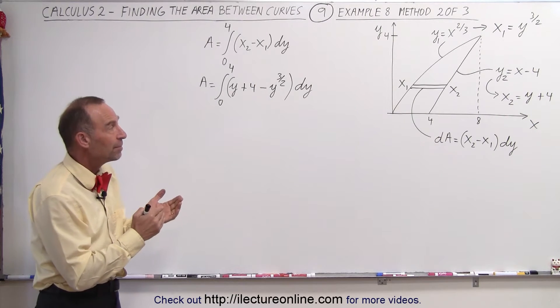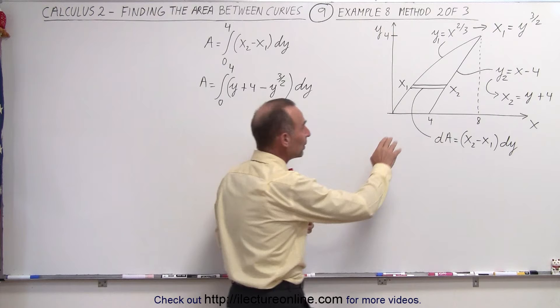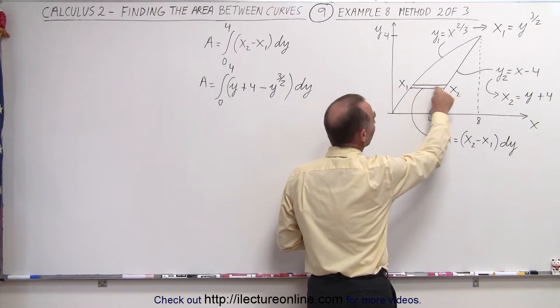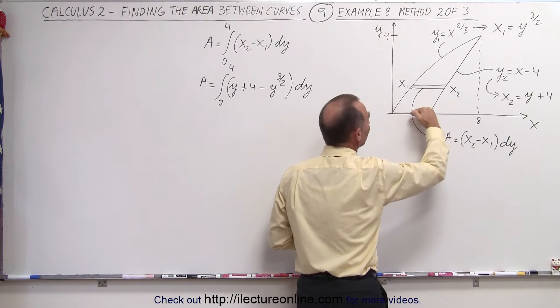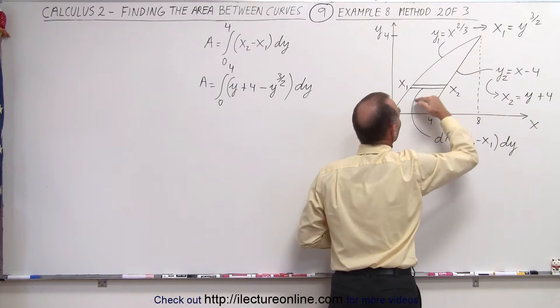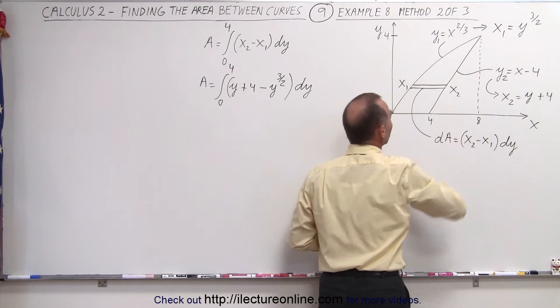But here you can see that to get the area between these two curves it may be better to have the area element going this direction because in that way you can see that the area element is the same for the entire area that we're trying to find.